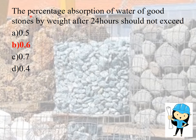The first question is: the percentage absorption of water of a good stone by weight after 24 hours should not exceed 0.6. There are many requirements of the properties of a good building stone — it should have a crushing strength greater than 1000 kg per cm², high durability, sufficient hardness i.e. coefficient of hardness greater than 14, and less water absorption.